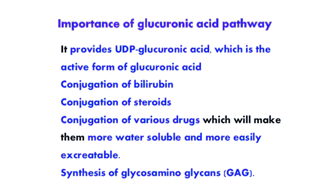From glucuronic acid, we get UDP glucuronic acid, which is the active form of glucuronic acid. This UDP glucuronic acid is involved in conjugation reactions. It participates in the conjugation of bilirubin — a bile pigment — which occurs as bilirubin monoglucuronide and bilirubin diglucuronide conjugated forms. UDP glucuronic acid plays a significant role in this conjugation. It also involves the conjugation of steroids, thereby helping their elimination.